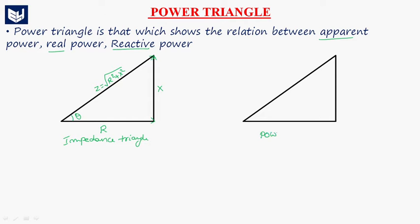In the power triangle, this is active power or real power, this is reactive power, and this one is apparent power. Real power, reactive power, and apparent power. This angle is the power angle.